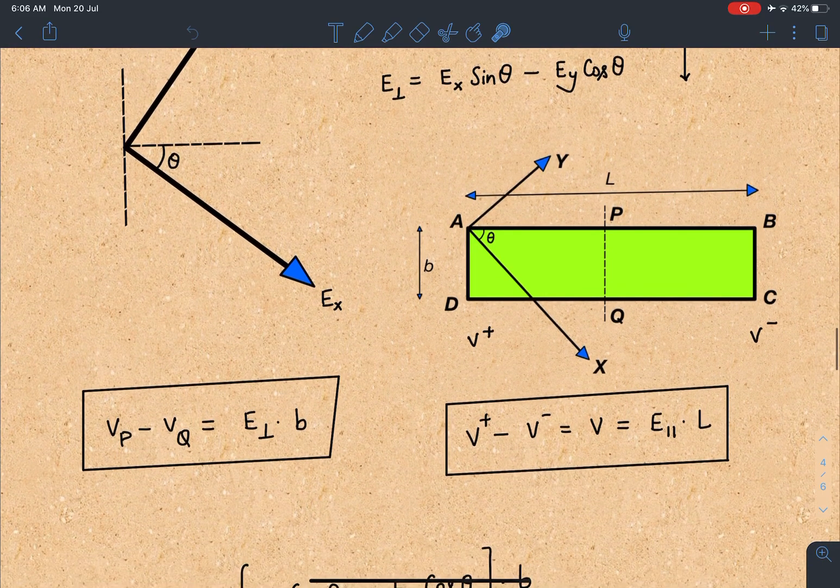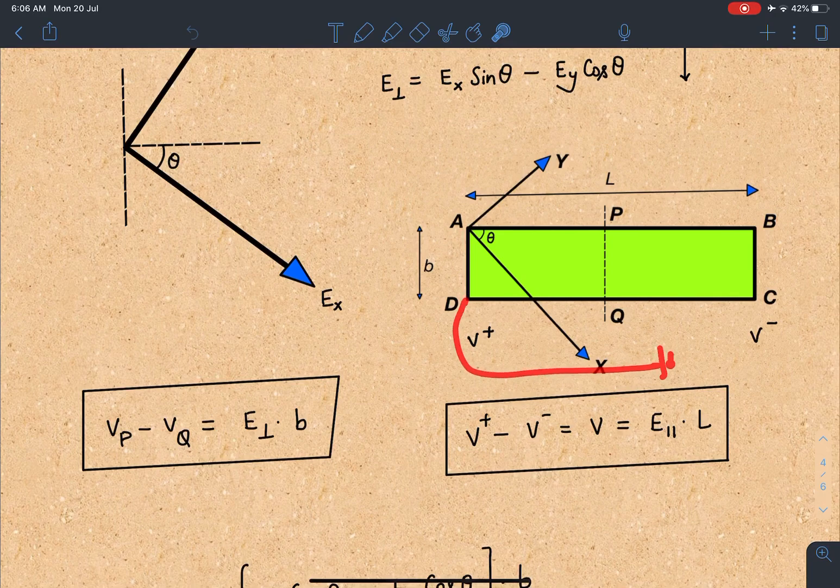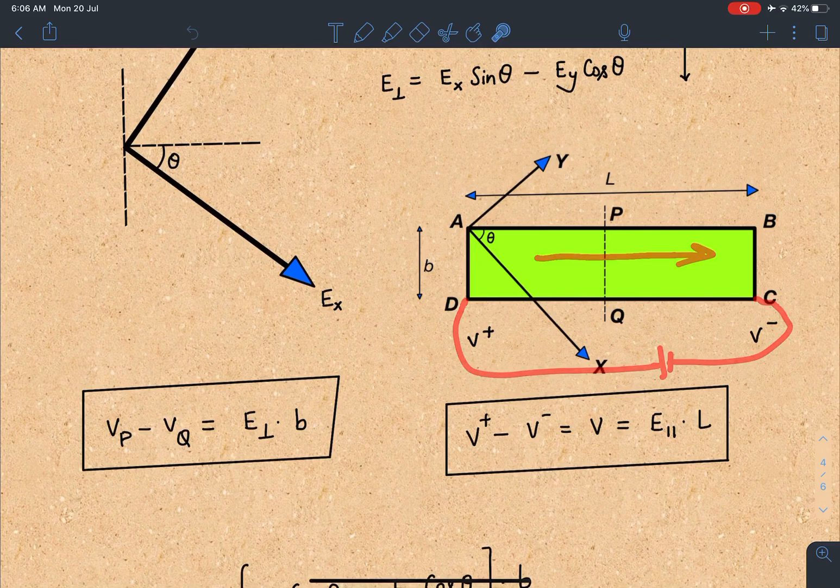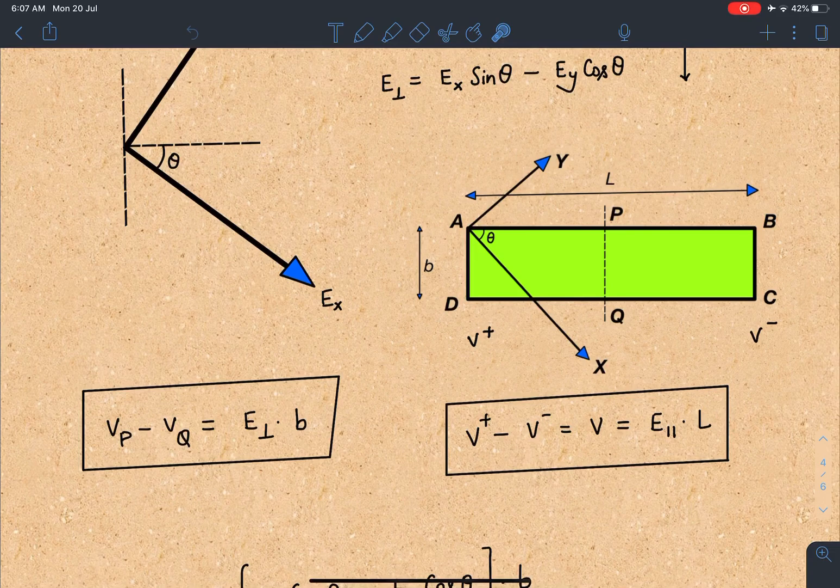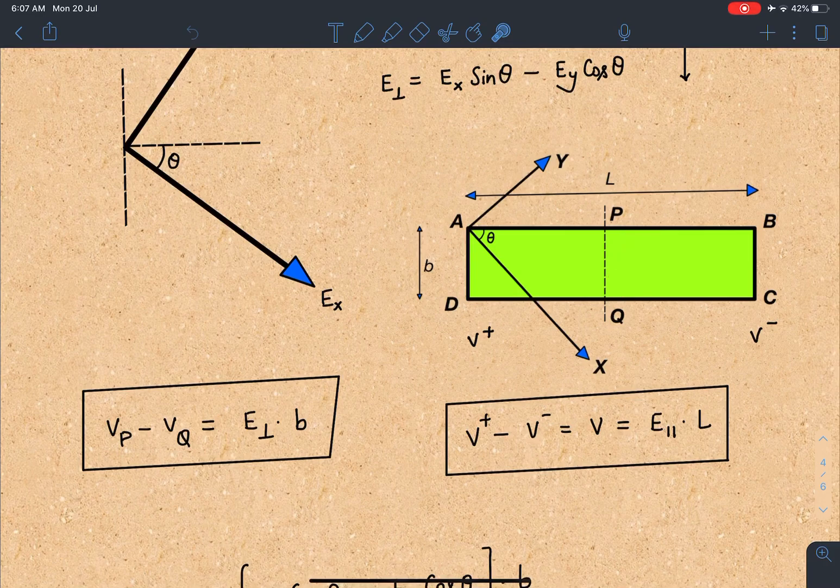Once if it is clear to you, directly I can say this ΔV_battery I can write as E_parallel, this component I have called E_parallel, so E_parallel × L as I have written here. Similarly V_PQ, this we have to find out, is going to be E_perpendicular × b, which I have written here.